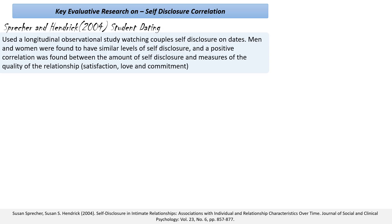Participants had high satisfaction with their relationship, felt more love, and had high commitment levels if they had more self-disclosure. A positive correlation means that as self-disclosure goes up, so do satisfaction rating, love rating, and commitment rating — as one co-variable increases, the other co-variable increases.